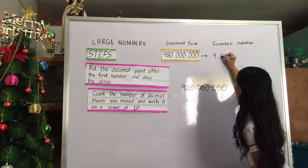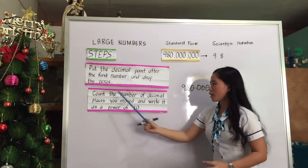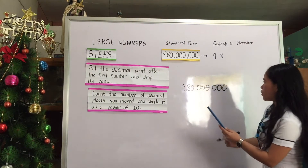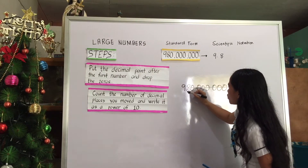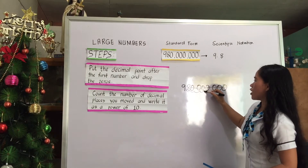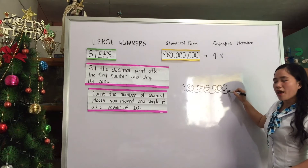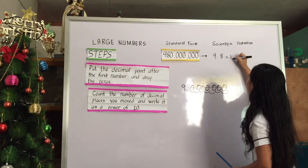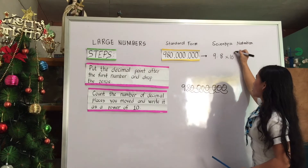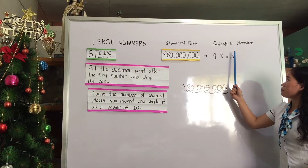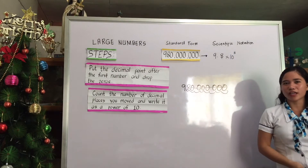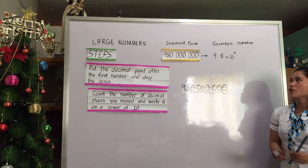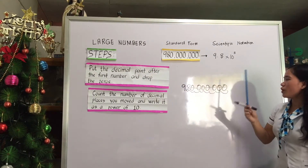For step two, count the number of decimal places you move and write it as a power of 10. From here, we count: 1, 2, 3, 4, 5, 6, 7, 8 — so the exponent is 8. We write it as times 10 to the power of 8. We use a positive exponent because we are working with large numbers. Is it clear?